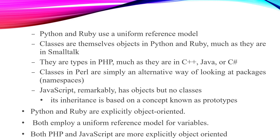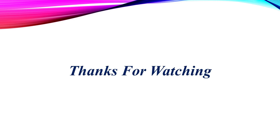Python and Ruby scripting languages are explicitly object-oriented and employ a uniform reference model. Classes are objects in Python, Ruby, and Smalltalk. In PHP, types and classes are separate. In Perl, classes are simply an alternative way of looking at packages. JavaScript has objects but no classes, and we must handle inheritance features manually. This concludes our discussion of the innovative features of scripting languages.